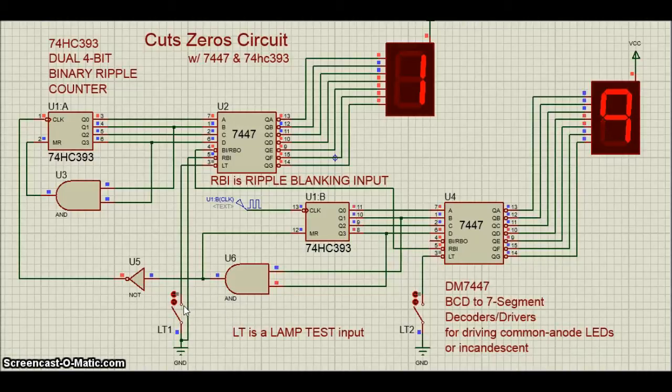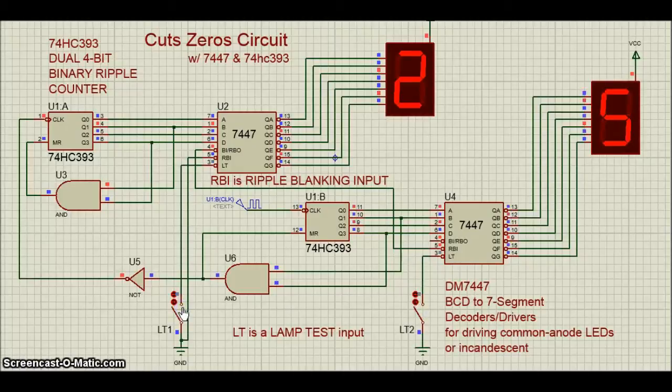The outputs to the display segments are open collectors that can control displays consuming 40 milliamperes maximum per segment. Now watch these functions: LT, RBI, and RBO.